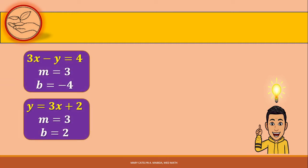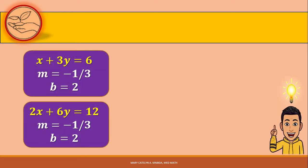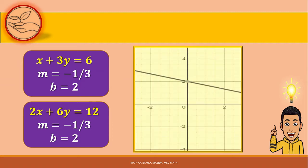Given that they have different slopes and y-intercepts, they are intersecting lines. For our second system, the slopes are the same — m is equal to 3 and m is equal to 3 — but they have different y-intercepts: b is equal to negative 4 and b is equal to 2. We can conclude that they are parallel lines. For the last system, the linear equations have the same slope, which is negative one-third, and same y-intercept, which is 2. These kinds of systems have lines that are coinciding.